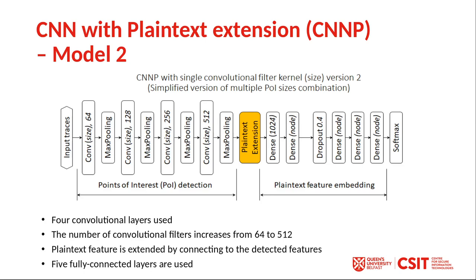Our second CNNP model has four convolutional layers in the convolutional path, with the number of nodes increasing from 64 up to 512. The remainder of the model is the same as the first model.